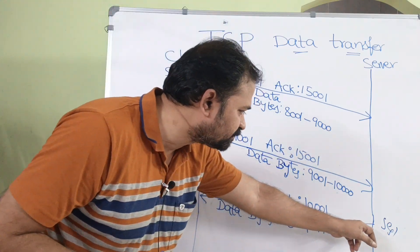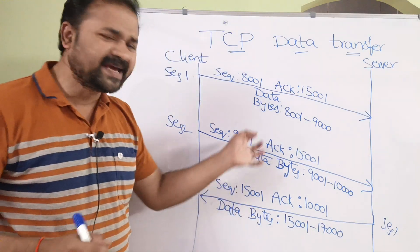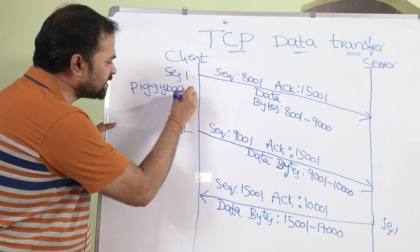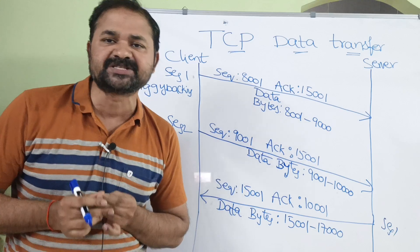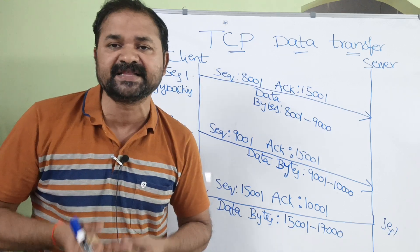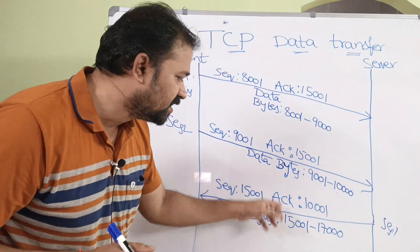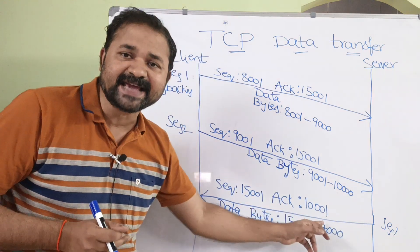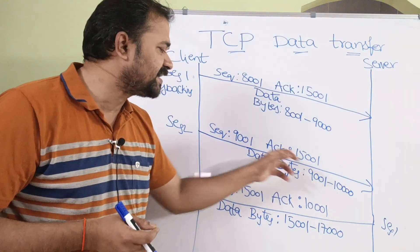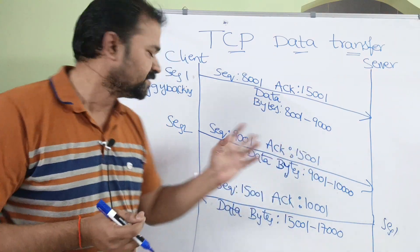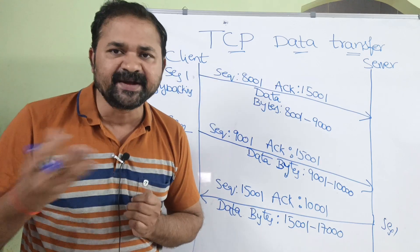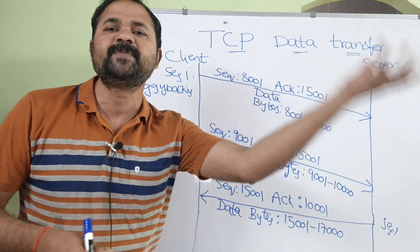Next, the server is sending a segment to the client. Here we use a concept called piggybacking. Piggybacking means that along with the data, the corresponding machine is also transmitting the acknowledgement. So the client sends data along with an acknowledgement for the previous data received from the server. TCP uses this concept of piggybacking.